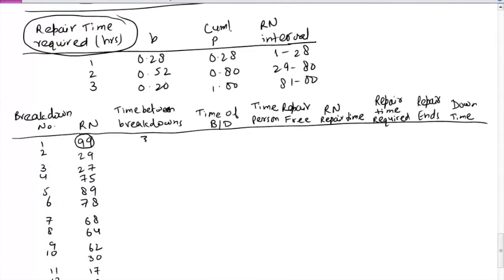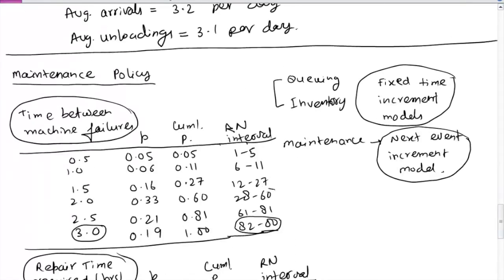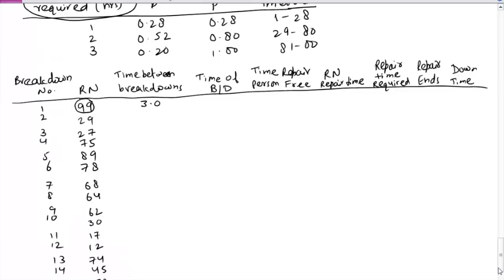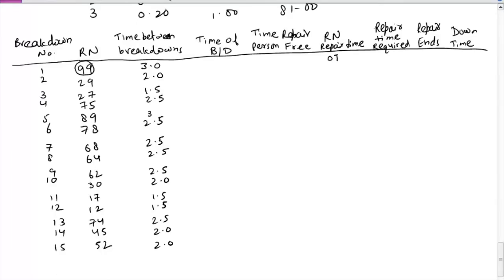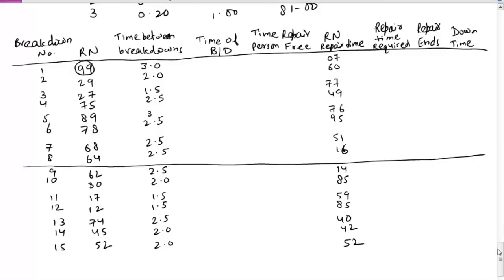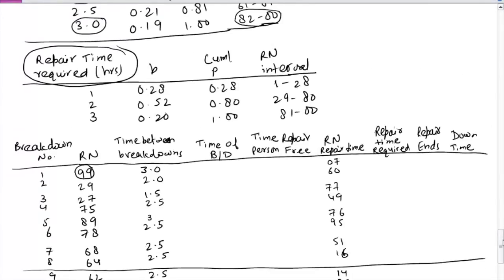The next random number is 29, which lies in this range, so the machine will fail after 2 hours. For repair times, the first number 07 lies in the second table's range, meaning it will take 1 hour to repair. The next repair time random number is 60, which falls in this range, so it will take 2 hours to repair, and so on. We fill the remaining columns in the same way.